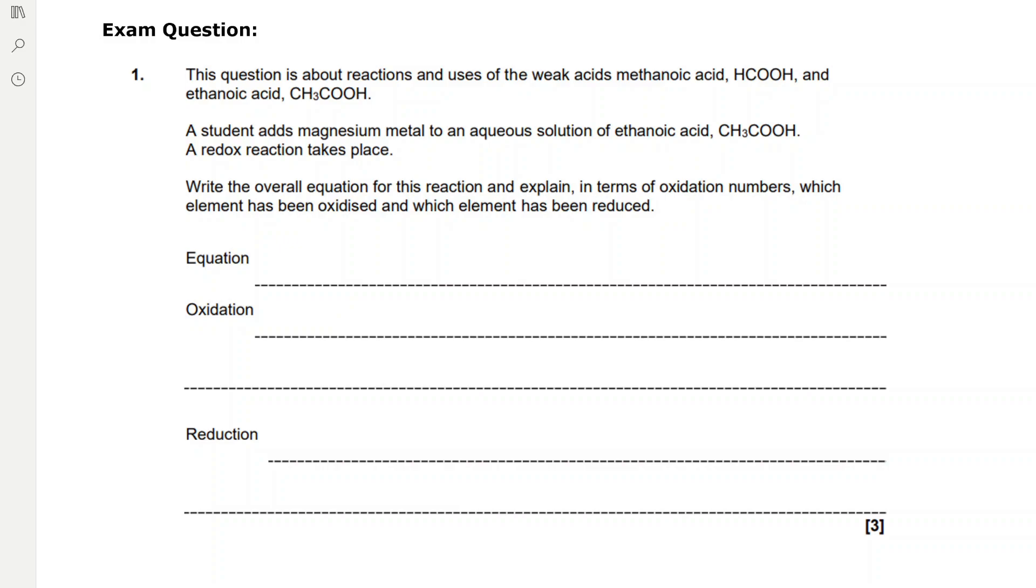Write the overall equation for this reaction and explain in terms of oxidation numbers which element has been oxidized and which element has been reduced. Magnesium is going to react with ethanoic acid to form a salt, which is going to be magnesium ethanoate.